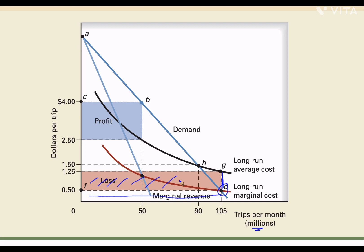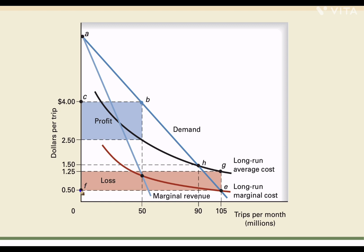In the long run, all firms should technically earn at least normal profit, so it is not feasible for regulatory authorities to ask them to set price equal to marginal cost, which is 50 cents here. One strategy is that the entire loss can be subsidized — the government gives a subsidy to the firm equal to the loss they are incurring. This converts the entire loss area into a subsidy, ensuring fair returns and normal profits.